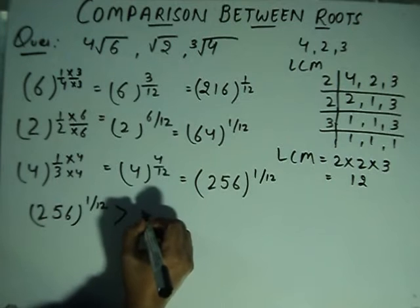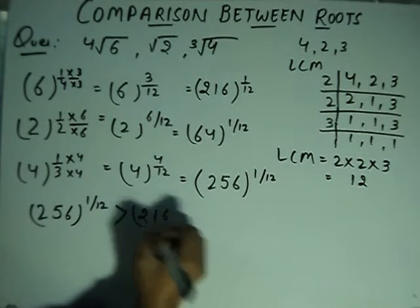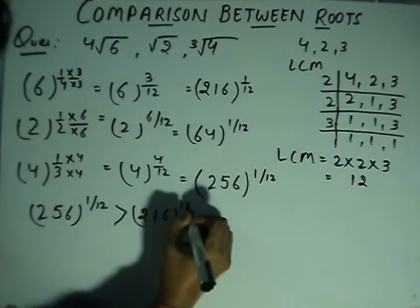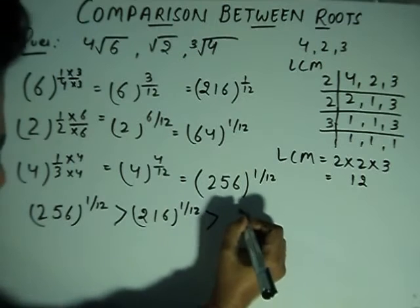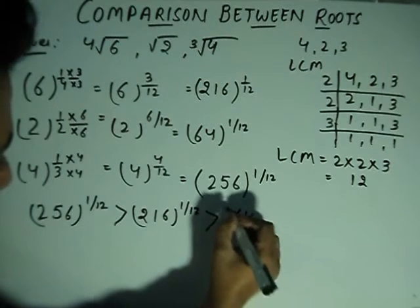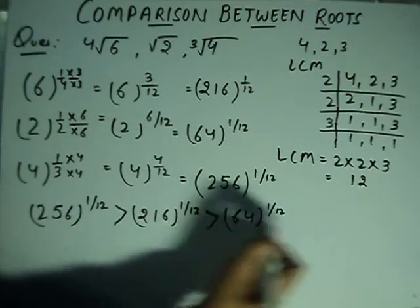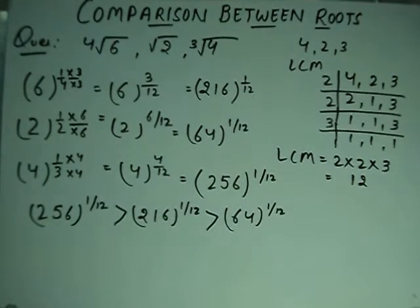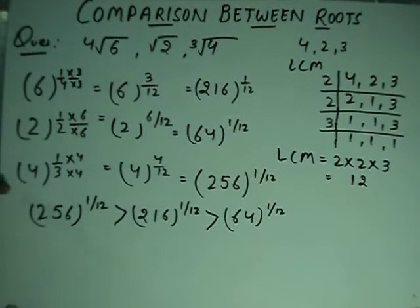Comparing the values: 4 to the power 4 equals 256, which is greater than 216, which is greater than 64. So we can now rank these three values in order.